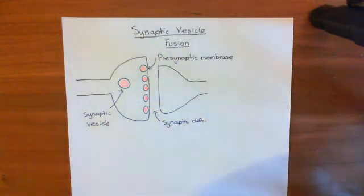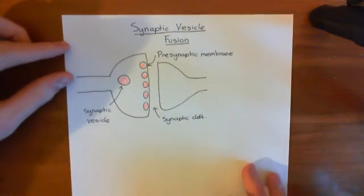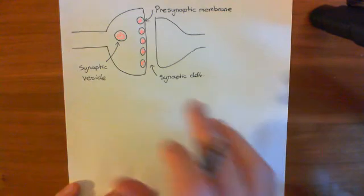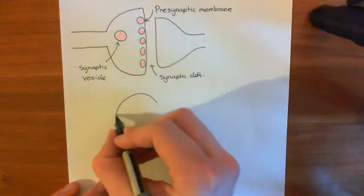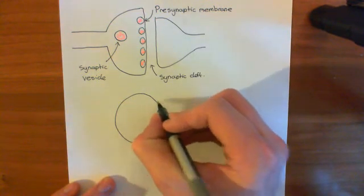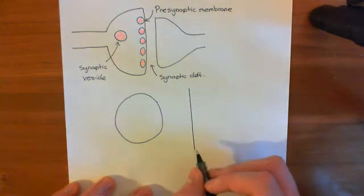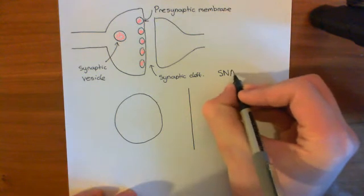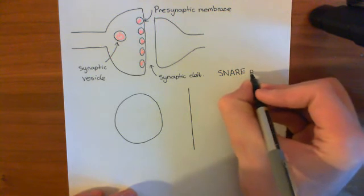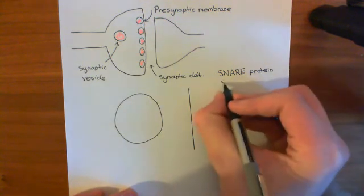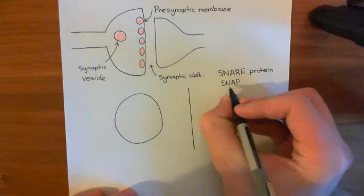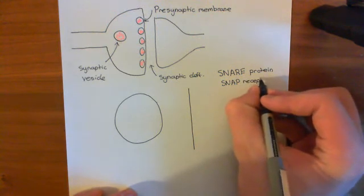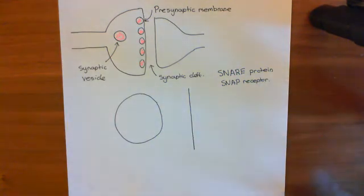Let's begin by asking how we dock our synaptic vesicle at the presynaptic membrane. This involves an interaction between proteins in the synaptic vesicle and proteins in the plasma membrane. Our story needs to begin with proteins known as SNARE proteins. SNARE — S-N-A-R-E — stands for SNAP receptor. A SNARE protein is any protein that will bind to another protein known as alpha-SNAP, which isn't really involved in the docking process but is involved in the recycling of SNARE proteins later. The SNARE proteins were initially discovered because they bound to alpha-SNAP, and that's the origin of their name.